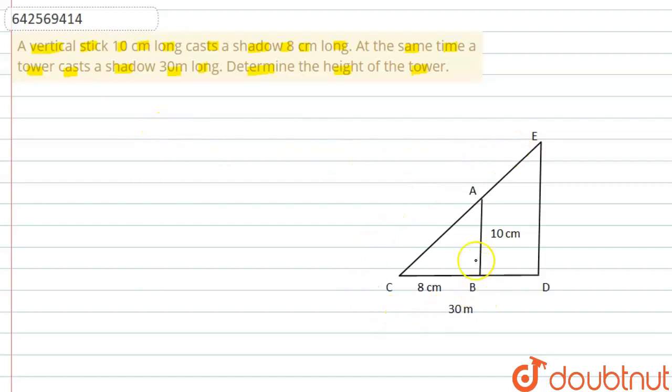Here we have drawn the diagram. We have taken AB as the vertical stick and its height is given to us as 10 centimeters. Then we have taken BC as the shadow of the stick. BC is shadow of stick and it is equal to 8 centimeters.